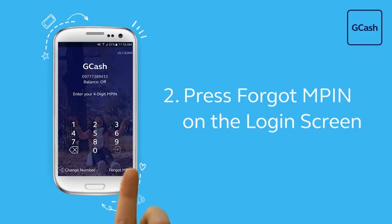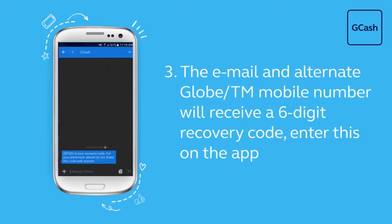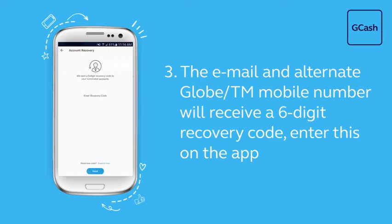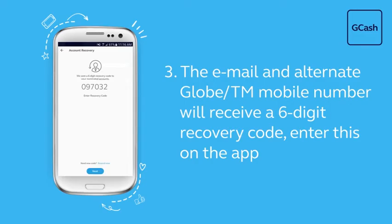Press Forgot MPIN on the login screen. Your email and alternate Globe or TM mobile number will receive a 6-digit recovery code. Enter this on the app.